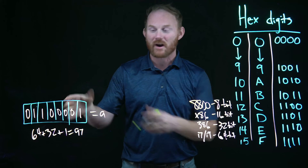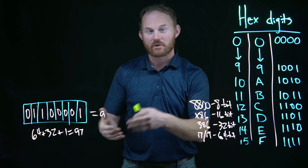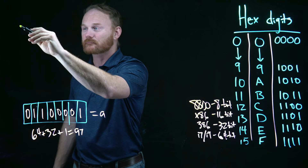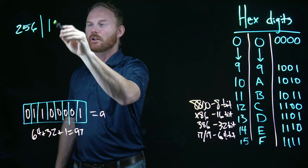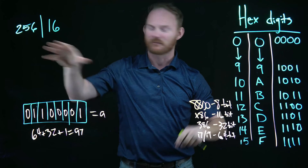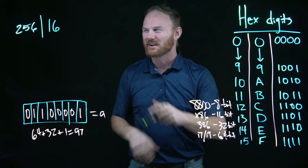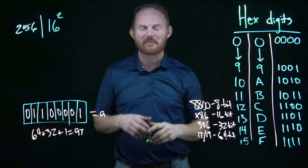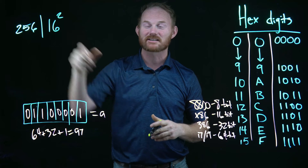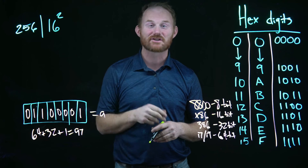How many possibilities are there in one byte — these eight bits? It's two to the eighth power, because we have eight slots and only two digits per slot: 256. Do you see a relationship between 256 and the 16 hexadecimal digits, zero through F? There is one: 256 is the same thing as 16 squared. So we can represent this entire byte with hexadecimal using just two digits.